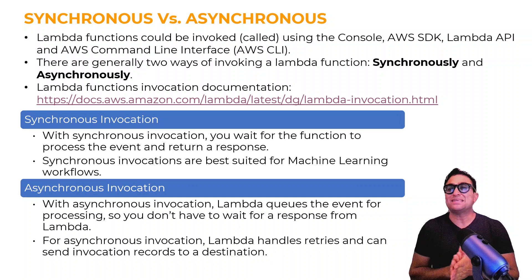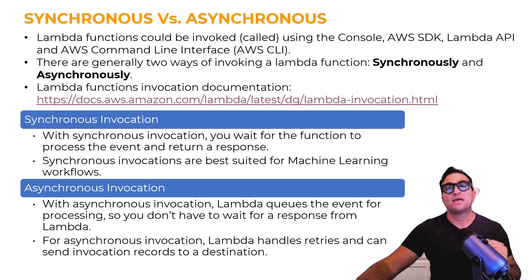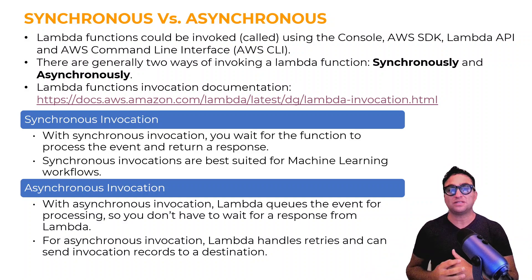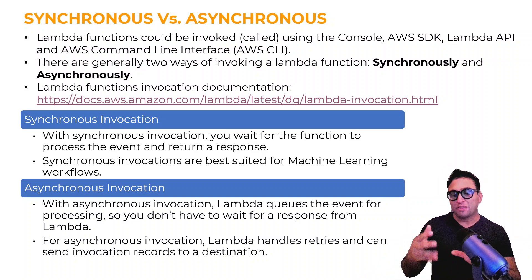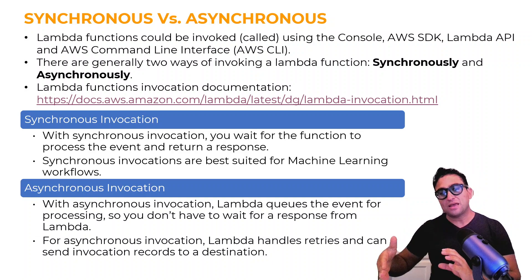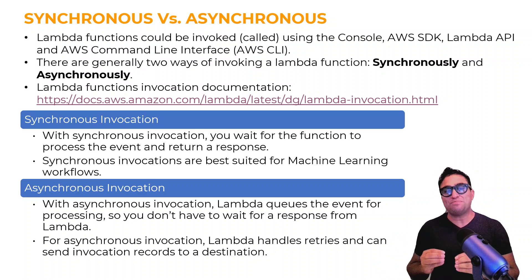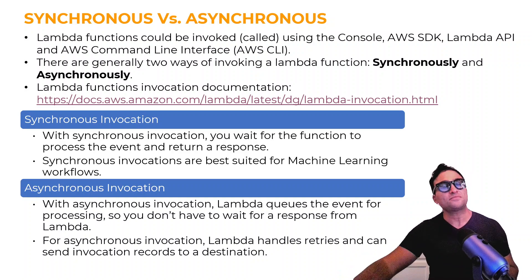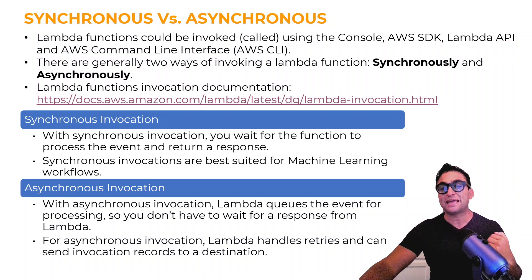With asynchronous invocation, Lambda will queue the event for processing — you don't have to wait for a response. Think of it as all these invocations or requests being put in a queue, and you are not going to be expecting a response right away. You will get a response, but not immediately. Lambda can also handle retries and send invocation records to a destination.